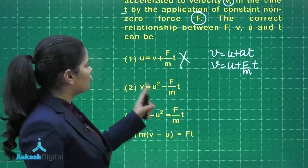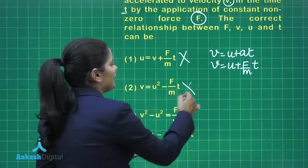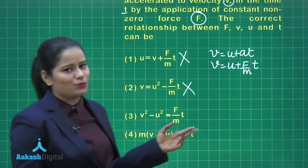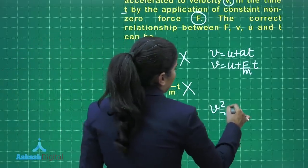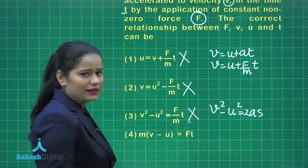Option number 2 says V is equal to U square minus F by M into t, which is already incorrect because we don't have such an equation. If we look at the third option, this says V square minus U square is equal to F by M into t. We have the equation V square minus U square equals 2AS, and hence this option is also incorrect.